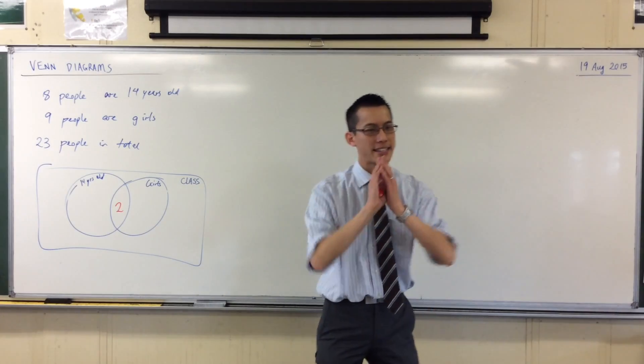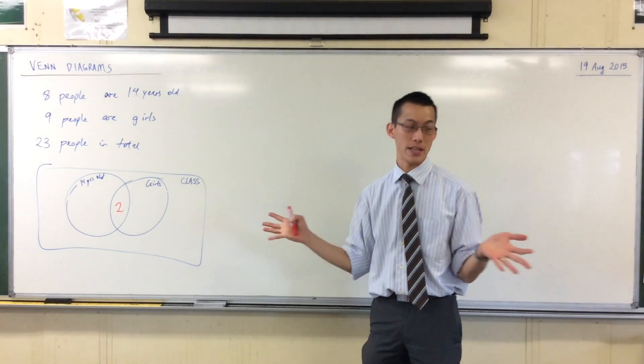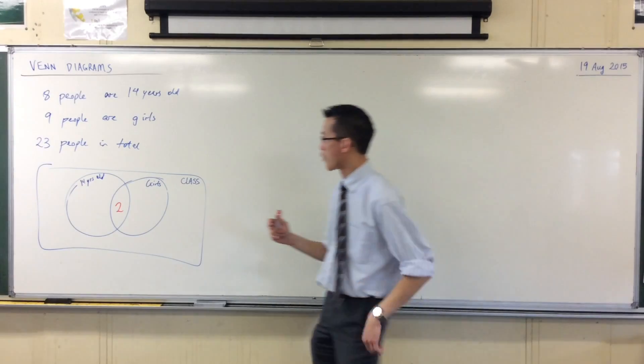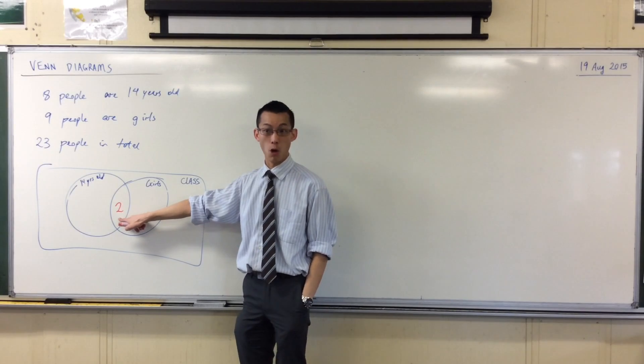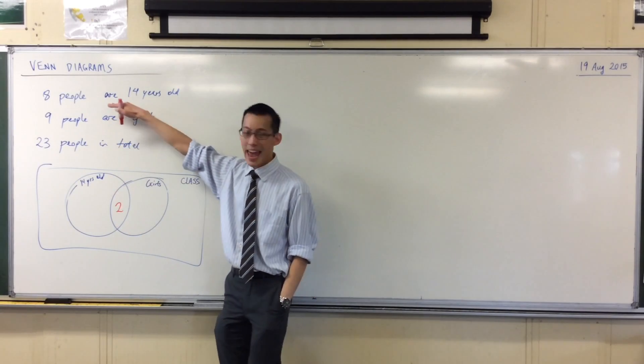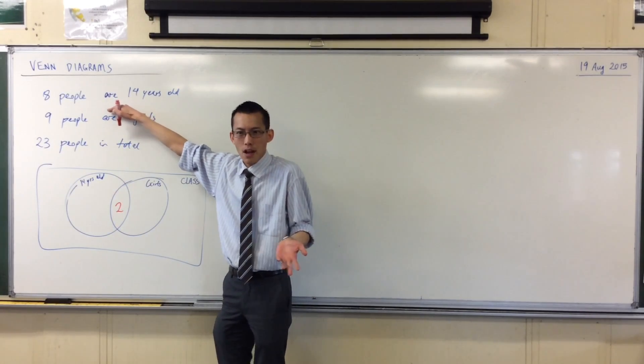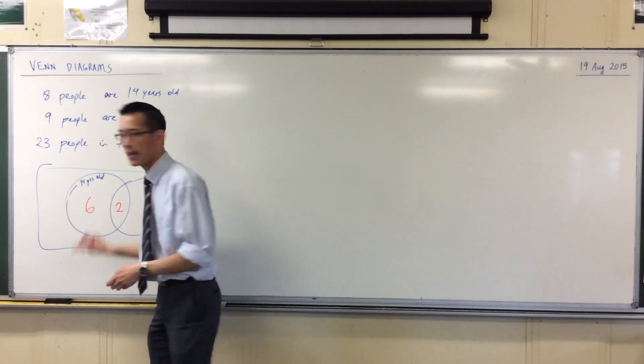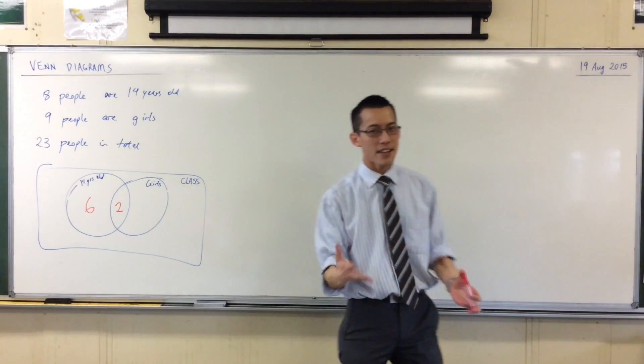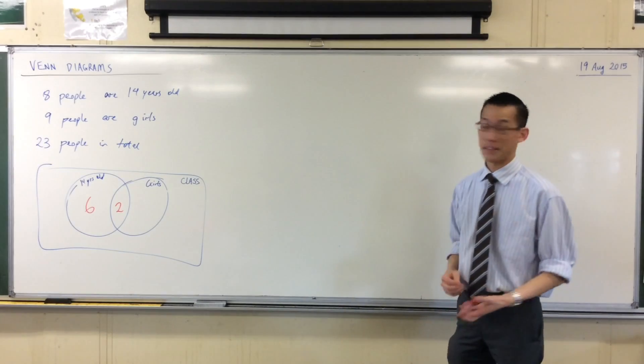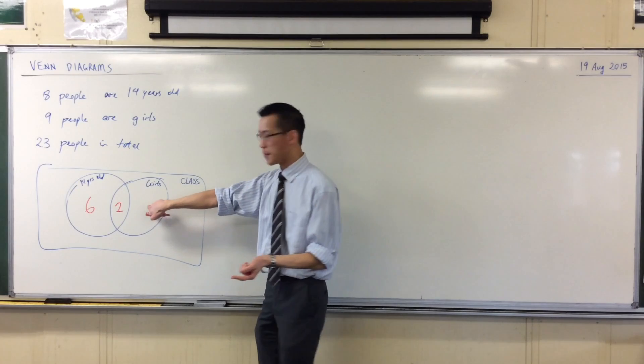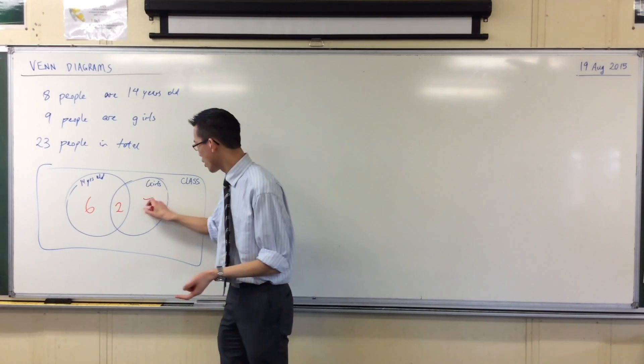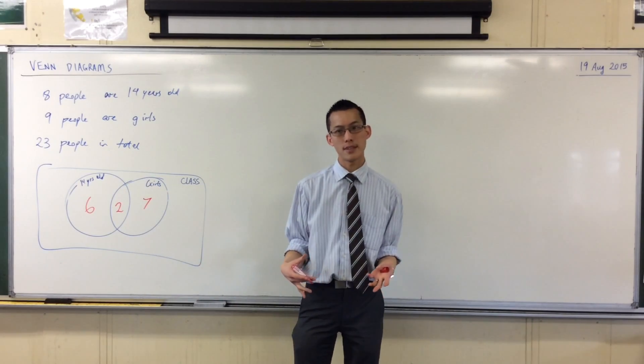Once I've got that, I can start to fill out logically the rest of this diagram. Think about it, for instance. Over here I've counted two of the people who are 14 years old already, which means that if there are eight in total, how many left over? There are six, so I'm going to put them here. They're outside the girls circle, but they are 14, so they're still inside the 14 year old circle. And by the same logic, how many people do I have here? I have seven girls who are not 14 years old.